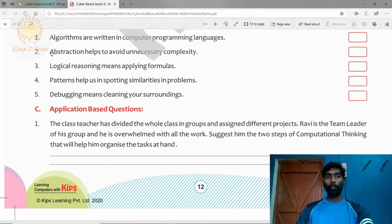Second question: abstraction helps to avoid unnecessary complexity. It is true because abstraction helps us to filter unnecessary things and focus on what is our goal. Third question: logical reasoning means applying a formula. Is it true? It is false.